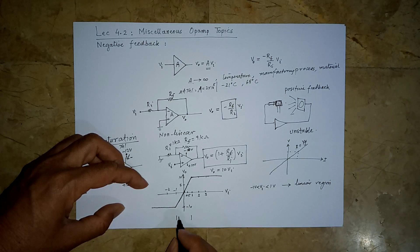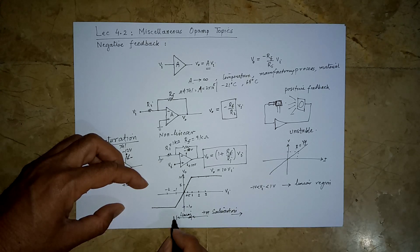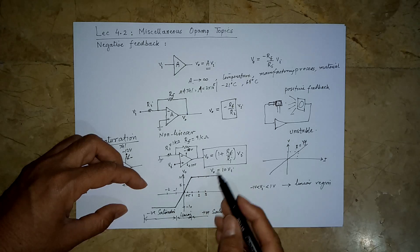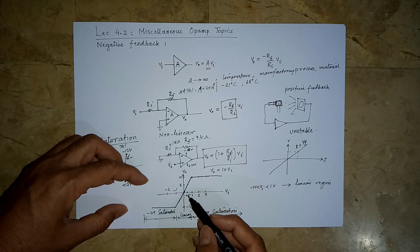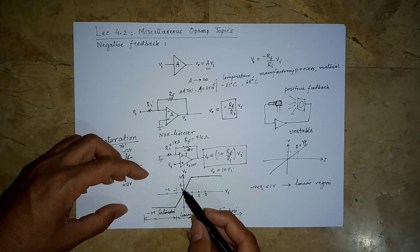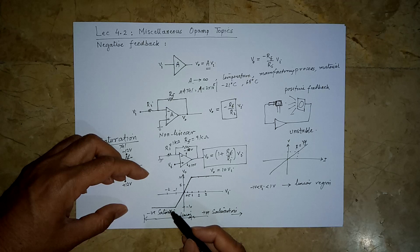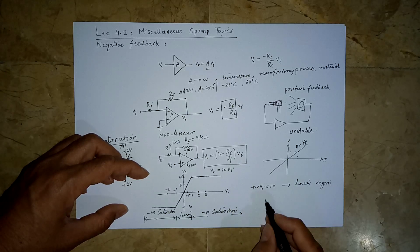Within this range it is the linear region. Beyond +1V the opamp enters positive saturation, and below −1V it enters negative saturation. In saturation, the relationship VO = (1 + RF/RI) × VI does not hold. We always try to keep the opamp in the linear region because in saturation the output is no longer dependent on VI through that formula.